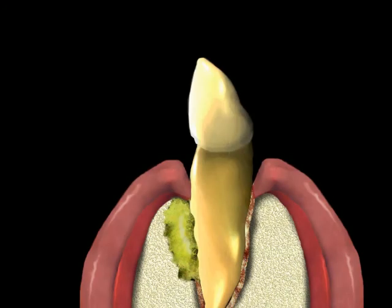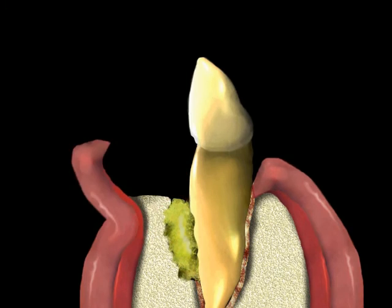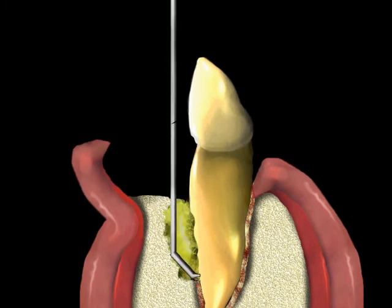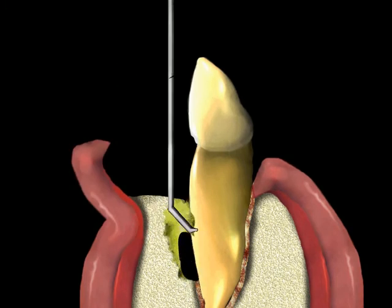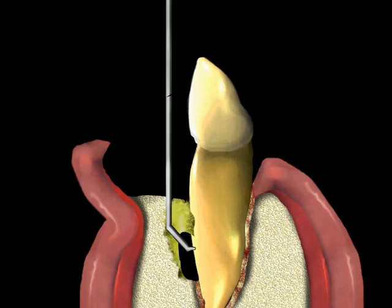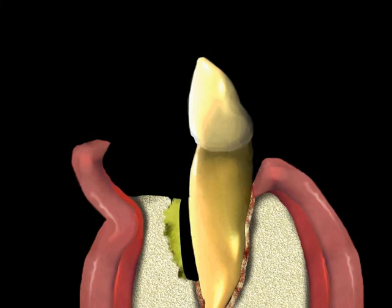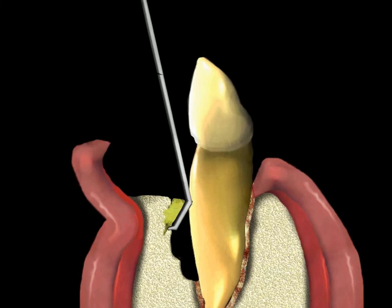Many times the shape of a bone defect caused by periodontitis is such that treatment can be directed towards getting bone to fill the defect. Sometimes the shape of the defect can be determined before surgery, but in many cases the defect needs to be directly seen in order to make a final determination as to whether it will allow for any bone fill.